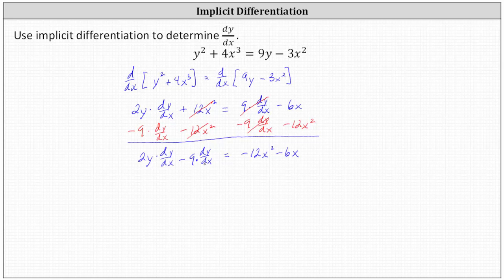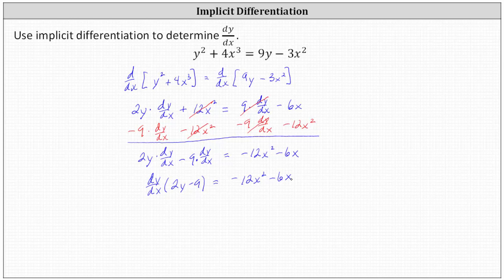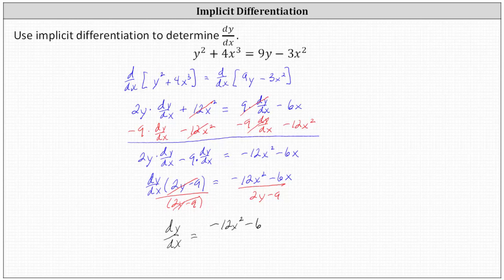Because we have two dy/dx terms on the same side and we're solving for dy/dx, we factor out the common factor of dy/dx. This gives us dy/dx times the quantity two y minus nine, equal to negative 12x squared minus six x. Finally, to solve for dy/dx, we divide both sides by the quantity two y minus nine, giving us dy/dx equals negative 12x squared minus six x, divided by the quantity two y minus nine.